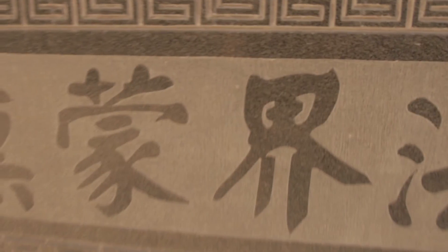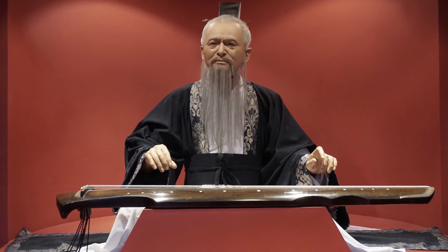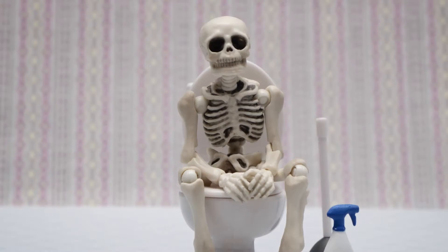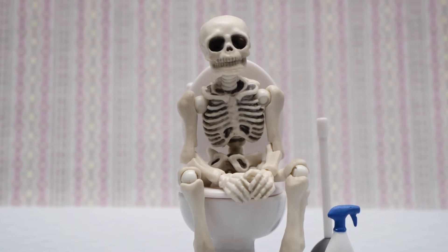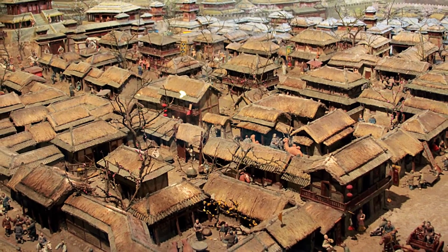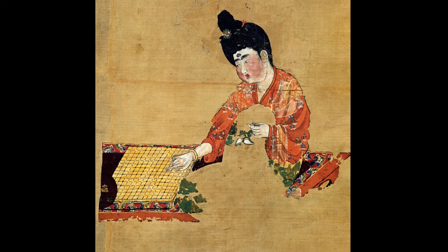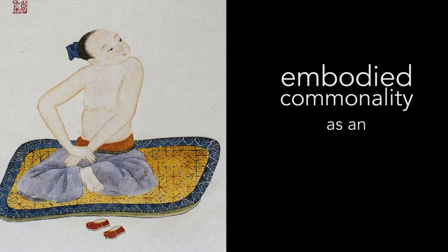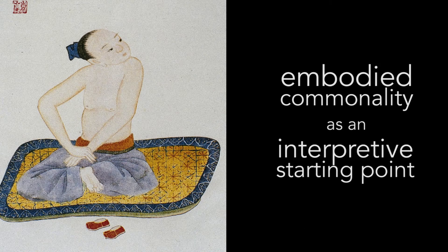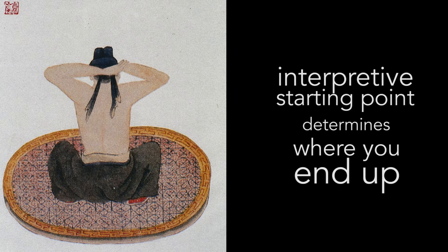If you change that perspective and think about the fact that they were Homo sapiens — we're Homo sapiens — we had the same bodies, we were interacting with a very similar physical world, and we had very similar cognitive structures because we had essentially the same genetic makeup. If you start from the assumption of embodied commonality, you have a completely different interpretive starting point. And your interpretive starting point often determines where you end up, because texts are hard to interpret.